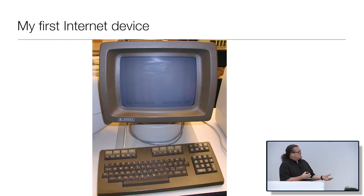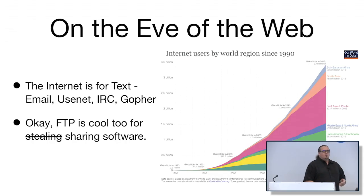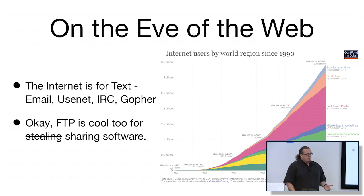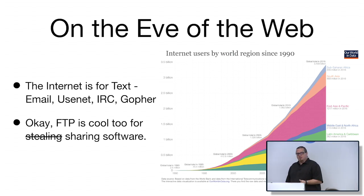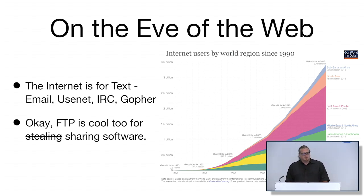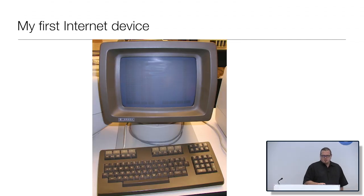But this was just a text terminal — the internet was mostly text. It really was email, Usenet, IRC, and Gopher. FTP was cool too, but used a lot less, except for sharing software.